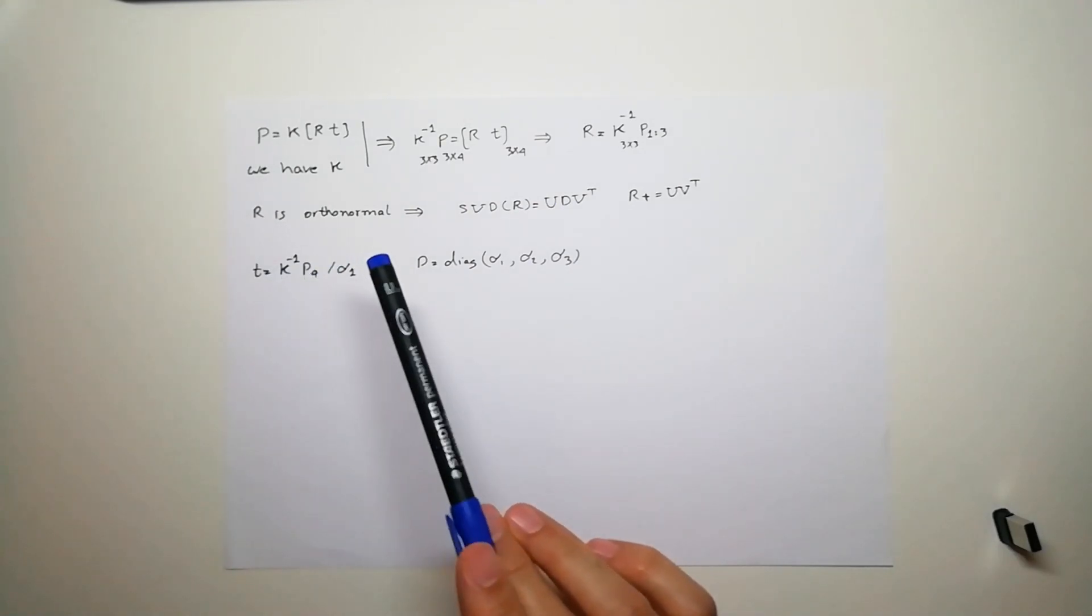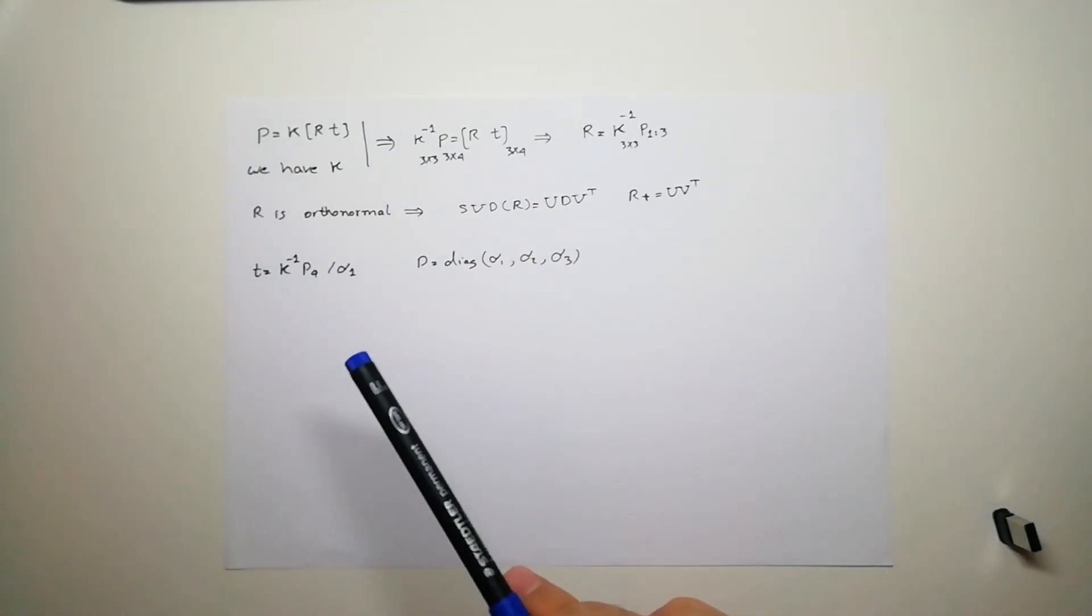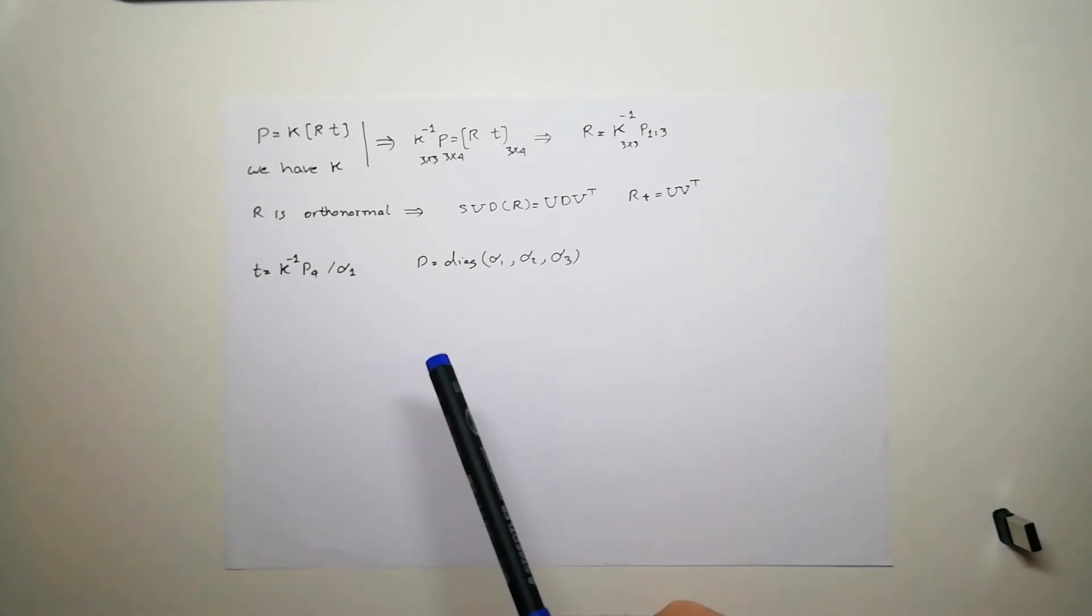By having six points, we can uniquely identify R and t for a PnP problem. Thank you.